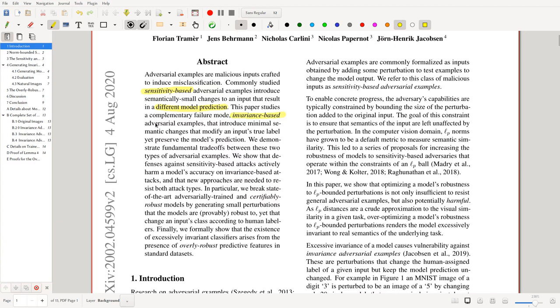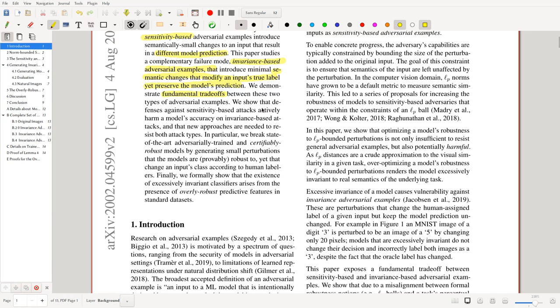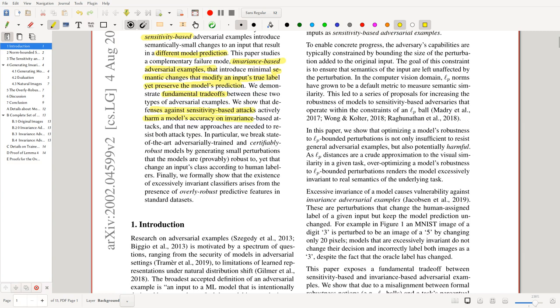Commonly studied sensitivity-based adversarial examples introduce semantically small changes to an input that result in a different model prediction, while this paper studies invariance-based adversarial examples, which are semantic changes that modify an input's true label yet preserve the model's prediction. We demonstrate fundamental trade-offs between these two types, and we show that defenses against sensitivity-based actively harm a model's accuracy on invariance-based. We break state-of-the-art adversarial trained models.